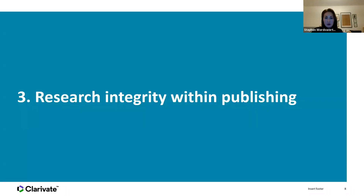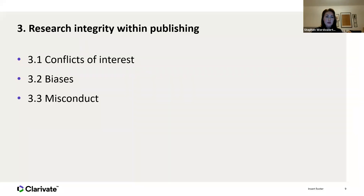Now, research integrity within publishing. I've divided this section into three parts: we're going to talk about conflicts of interest — both as an author and as a peer reviewer — then cover unconscious biases we might have when peer reviewing, and also identifying misconduct when you're reviewing other manuscripts.